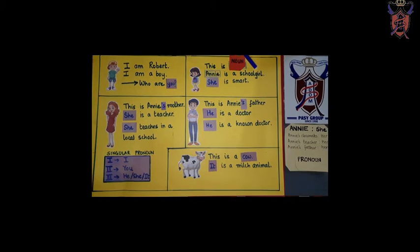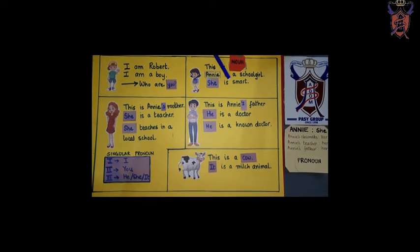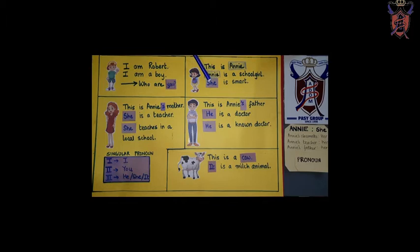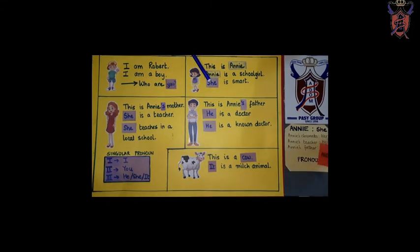Annie is a school girl. She is smart. So, you can see that now instead of Annie, here we have used she. So, what is she? She is a pronoun.